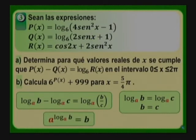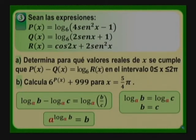Para el inciso B, calcular C elevado a P(x) + 999 para x = 5π/4. Debemos sustituir el valor de P y calcular el valor numérico de la expresión resultante. Resulta importante recordar la propiedad: A elevado al logaritmo en base A de B es igual a B. Aprovechen para resolver con sus compañeros y profesores de manera independiente.